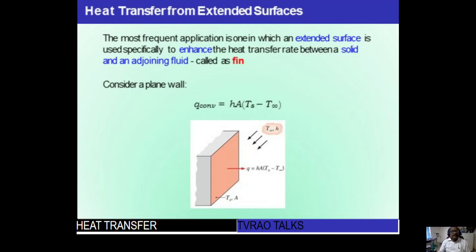Heat transfer from extended surfaces — the most frequent application of extended surfaces is to enhance heat transfer between a solid and an adjoining fluid. Up to the surface, heat is transferred by conduction; from the surface to the surroundings, heat is transferred by convection. The heat transfer by convection is Q = h·A·(Ts − T∞), where h is the convective heat transfer coefficient, A is the surface area, Ts is surface temperature, and T∞ is surrounding temperature.